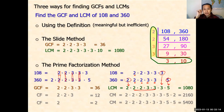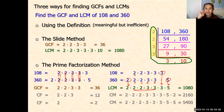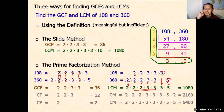So these are the three methods for finding GCF and LCM. The first method, using the definition, is not efficient but is very meaningful. We should teach students to find GCF and LCM using the definition first, because that is the most meaningful approach.